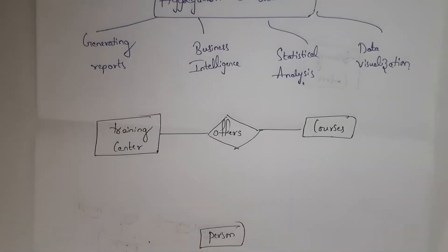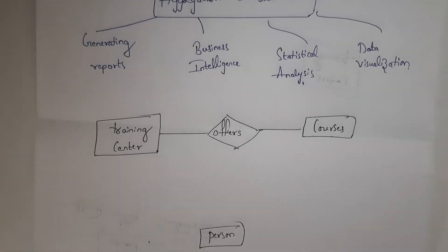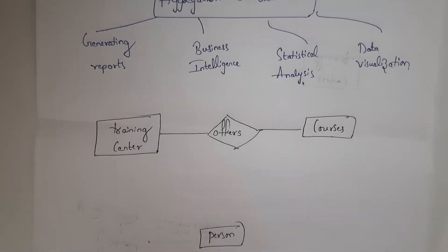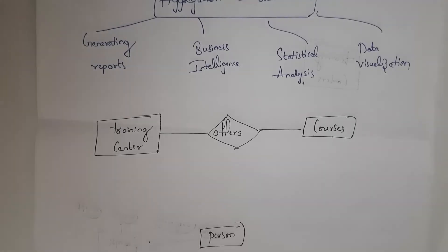For example, there is one training center. The training center will offer some courses like C programming, Java, and so on. So I took two entities — training center and courses — and established a relationship called 'Offers.' Now, a person wants to join the training institute. Whenever any person wants to join, they will inquire about the training institute — whether it is good or bad, how many years it has been present — and also inquire about what courses the training institute provides, like Java, C++, and so on. So the person will inquire about both the training center and the courses.